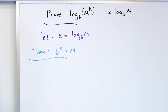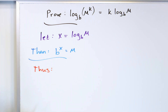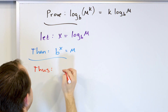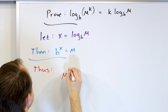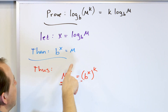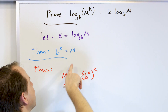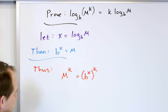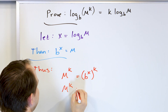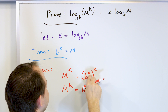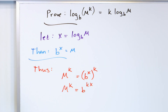We have a conclusion to draw here. Ultimately, I want m to the power of k. So m to the power of k is b to the x raised to the power of k. All I've done is recognized that this gives me a definition for m, and I want to raise it to a power because that's what's in my proof. This means m to the power of k equals b to the kx, because an exponent raised to an exponent means I multiply those things together.